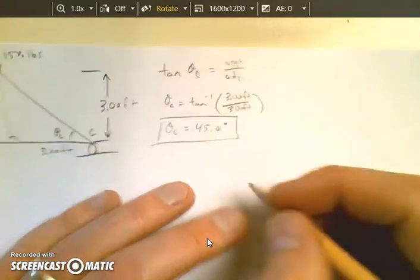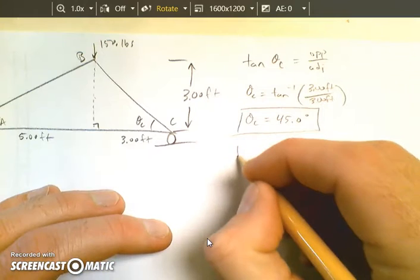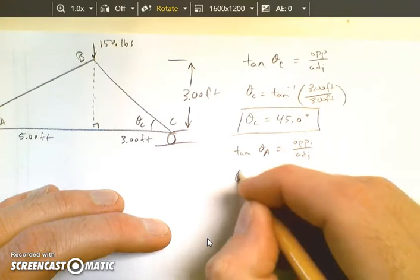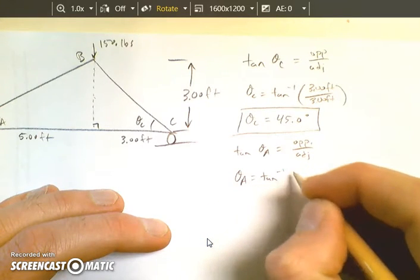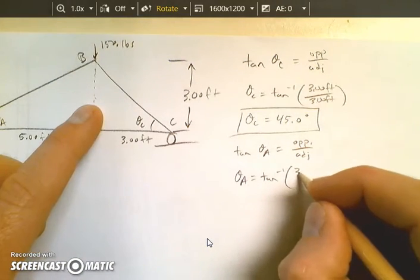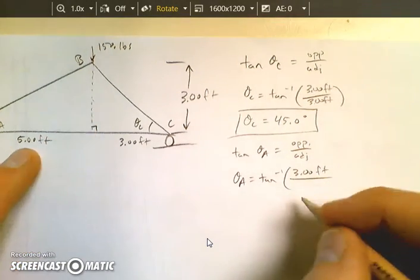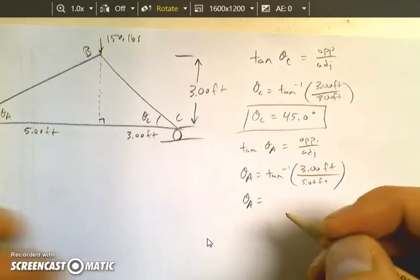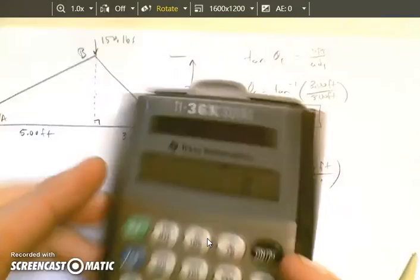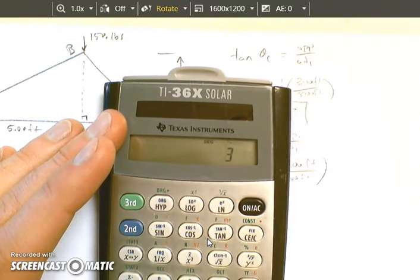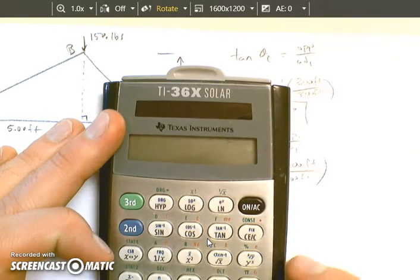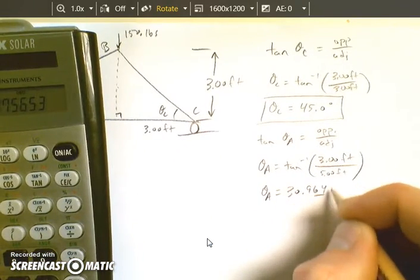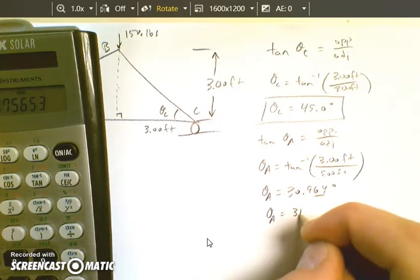And then theta A is going to be tangent theta A equals opposite over adjacent here. So theta A is the inverse tangent of the opposite. So here the opposite side is 3 feet. The adjacent side is 5 feet. So theta A equals, I think it's 30.964. Check that. 3 divided by 5, inverse tangent, 30.964 degrees.